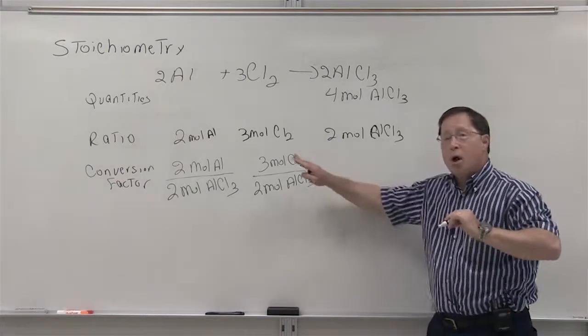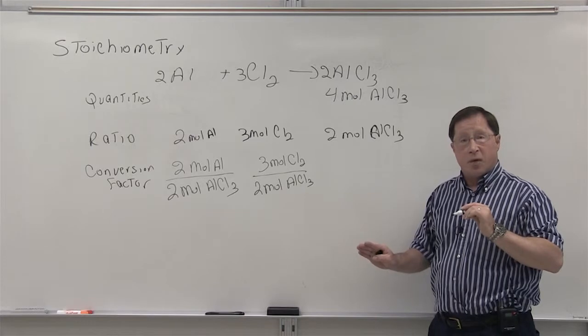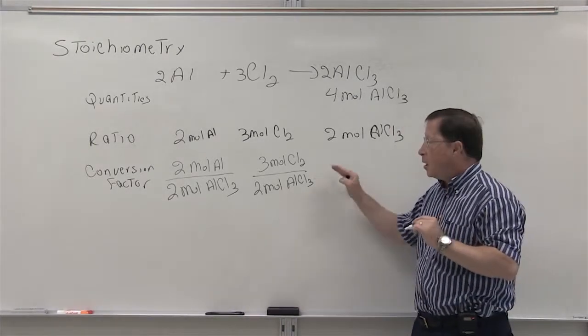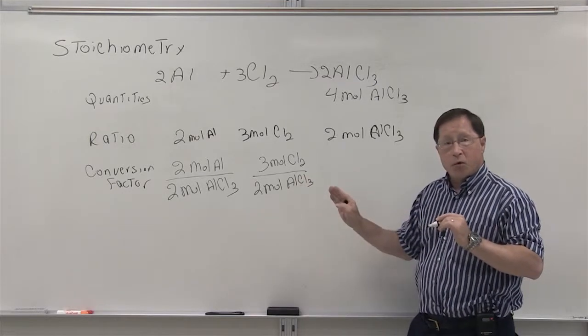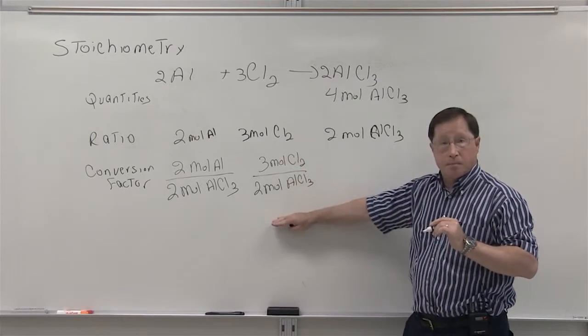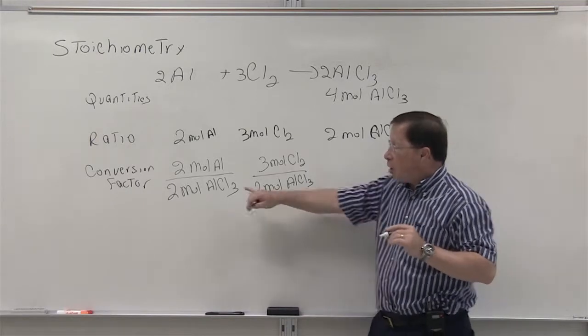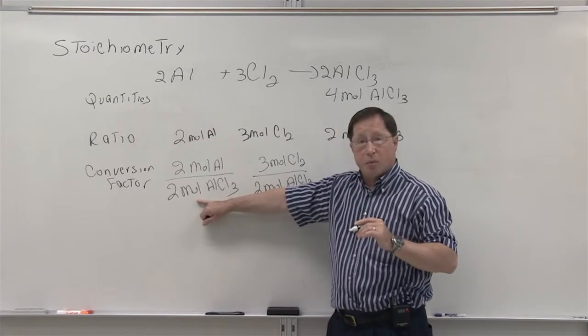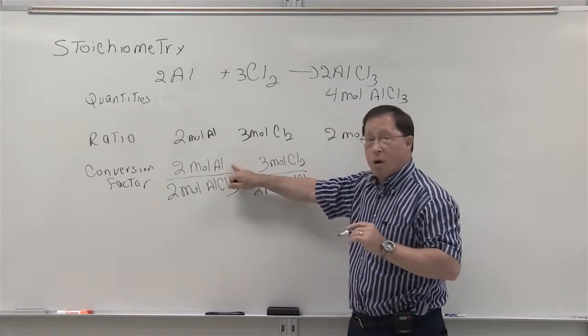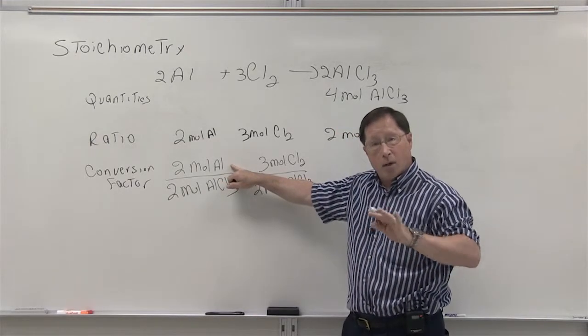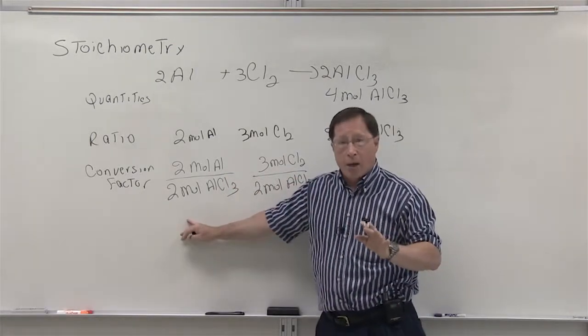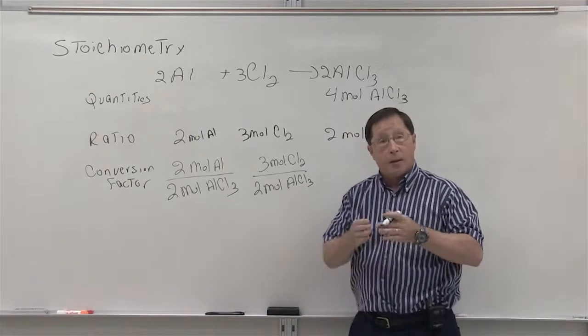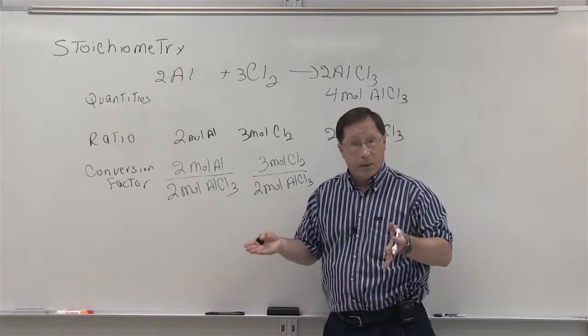Now, if you talk in detail about conversion factors, you will note that we could have actually created an additional conversion factor for each of these two. Because you could also express this as two moles of aluminum chloride over two moles of aluminum. Either one of these would be the ratio. But the one that we need right now relates the aluminum to the aluminum chloride, and I'm going to explain why that is needed.